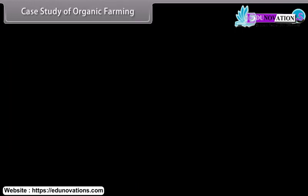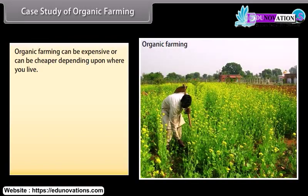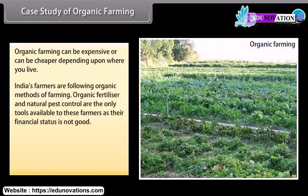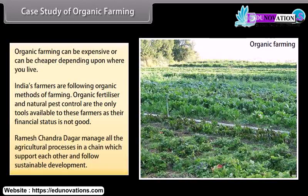Case study — organic farming: Organic farming can be expensive or cheaper depending on where you live. India's farmers are following organic methods of farming. Organic fertilizer and natural pest control are the only tools available to these farmers, as their financial status is not good. Ramesh Chandra Dagar manages all agricultural processes in a chain which support each other and follow sustainable development.